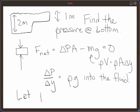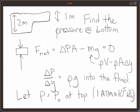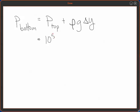So if we let the pressure be something at the top, say 1 atmosphere, about 10 to the 5 pascals, then we can say that the pressure at the bottom is equal to the pressure at the top plus rho G delta Y.